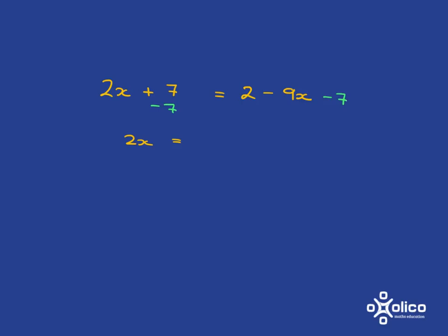2 subtract 7 is negative 5, and so we have that picture. Now remember, we're wanting to get rid of the x's on this side.